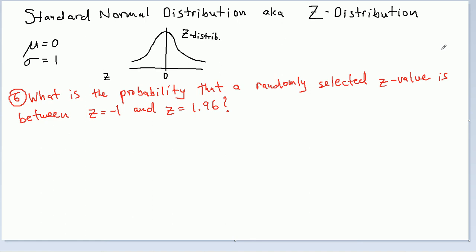Hi guys, here's question 6 with the standard normal distribution. What is the probability that a randomly selected z value is between z equals negative 1 and z equals positive 1.96?